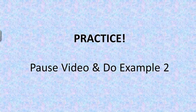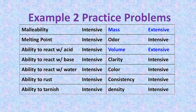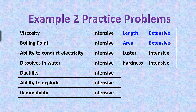I'd like you to pause the video and do example two. Check your answers here: mass and volume are the only extensive properties — they are the only ones that depend on the amount. Length and area are also extensive properties, as they are the only ones that depend on the amount. If you have any questions, let me know next class.